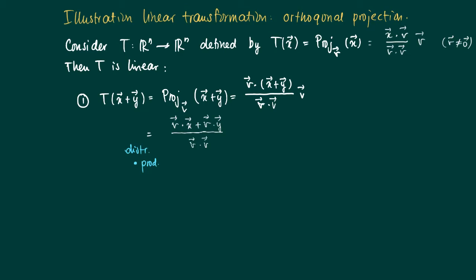So we obtain the following formula. We split off the dot product of V times X divided by V with itself plus the dot product of V times Y divided by V with itself times V.